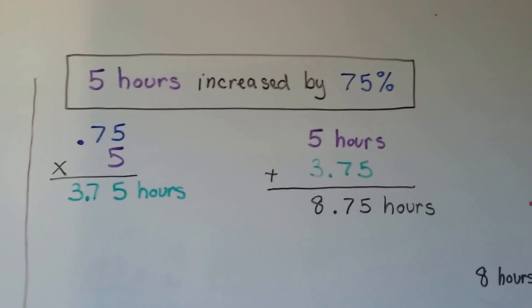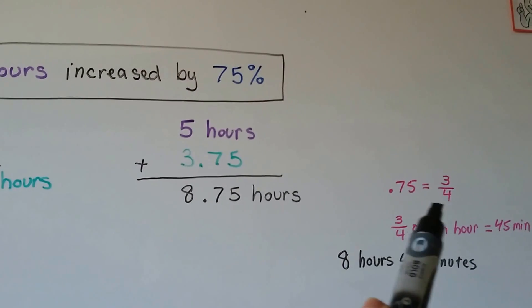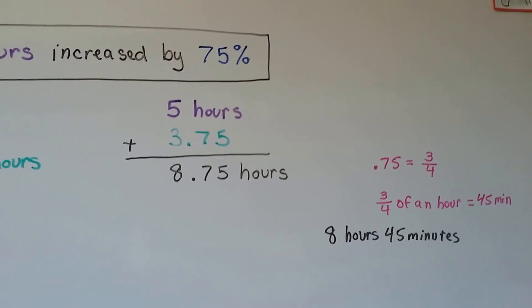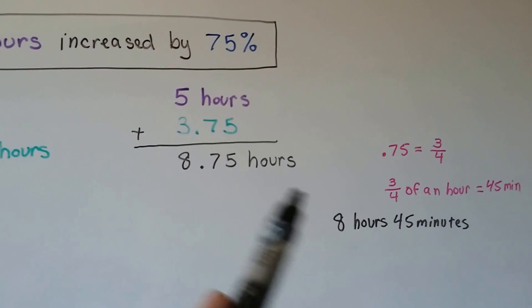We can even take this a little step further. We know .75 is 3 fourths, right? And 3 fourths of an hour is 45 minutes. So that means it's 8 hours and 45 minutes.